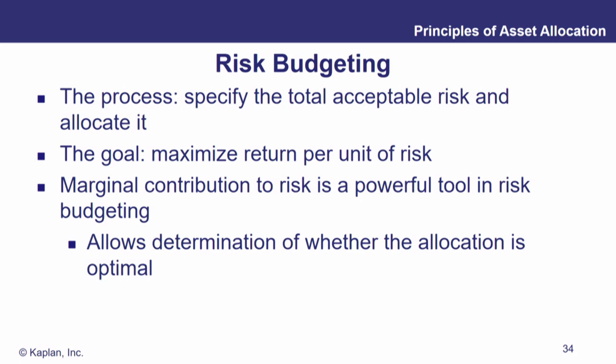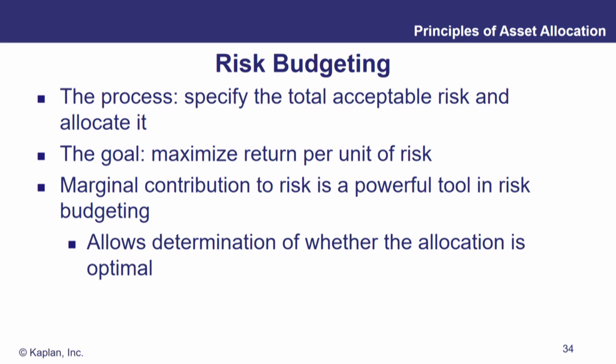One way to do this: we specify the total acceptable risk and allocate it. If we have a certain standard deviation that we don't want to go above, we figure out how to allocate that standard deviation so that we bump up against that level without exceeding it, while maximizing return for each unit of risk. We start from zero and work our way up to our acceptable risk level. Along the way, we figure out the marginal contribution of risk — how much risk we're adding and how much excess return we're getting — making choices that give us the most excess return per unit of risk.